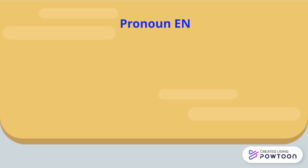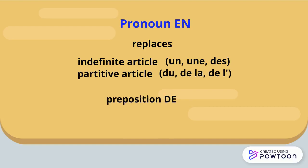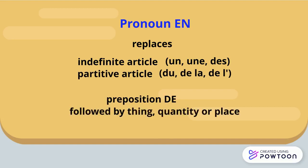So let's start with en. It replaces the indefinite article un, une, des, or the partitive article du, de la, de l', or the preposition de, followed by a thing, a quantity, or a place, but not a person.